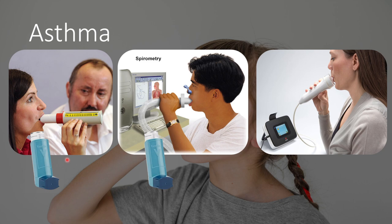Next we have spirometry, where the patient exhales with as much power as possible, generating the graphs shown earlier. Generally, after inhalers like salbutamol are given, there is a reversible difference in function. We also have fractional exhaled NO, a diagnostic test measuring the amount of exhaled NO, providing a more accurate assessment of asthma — though it is not necessarily required, as asthma can be diagnosed clinically.